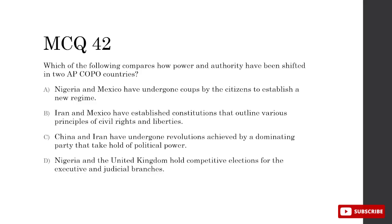Which best compares how power and authority has shifted in two AP comparative countries? A — Nigeria and Mexico have undergone coups: only Nigeria underwent a major coup. B — Iran and Mexico have established constitutions outlining principles of civil rights and liberties: both true. C — China and Iran have undergone revolutions achieved by a dominating party: Iran is dominated by religion, not a major party — it's a theocracy. D — Nigeria and UK hold competitive elections for executive and judicial branches: judges aren't elected by the people, and the UK's prime minister isn't elected directly either. So B is correct.